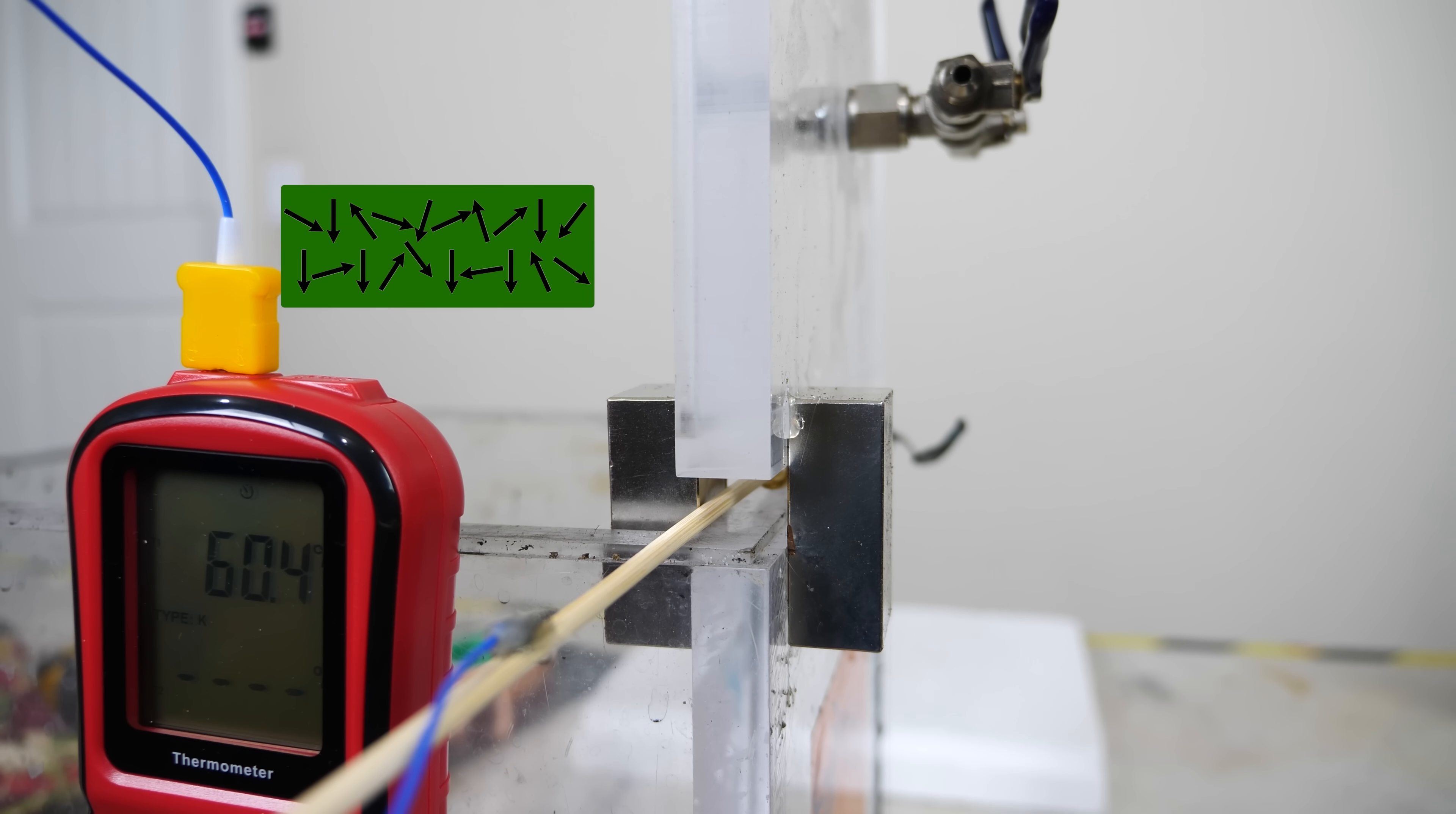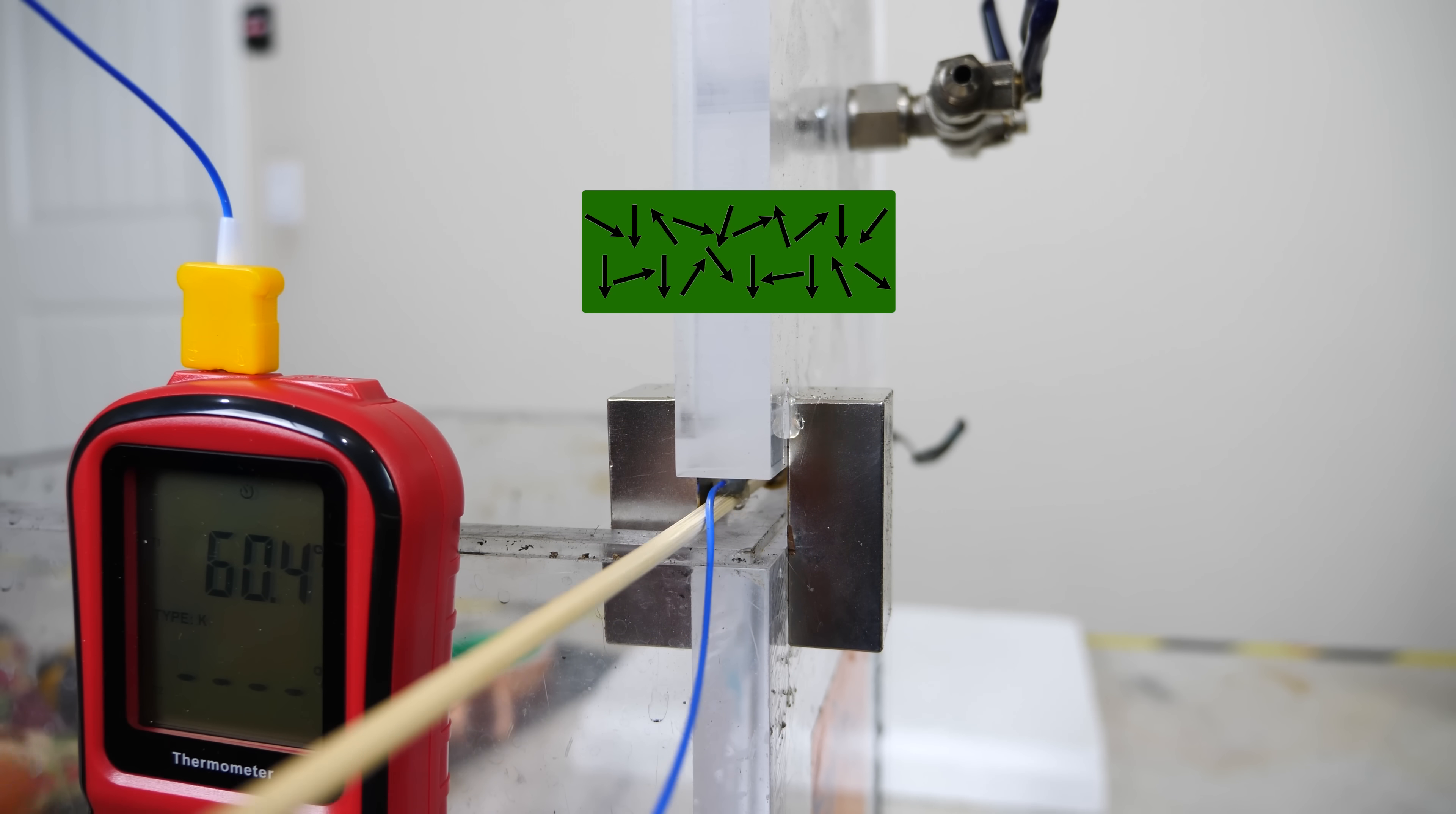So how is this working? When you apply a magnetic field to the gadolinium, it causes the magnetic domains to align. This reduces the degrees of freedom of the material so it can't vibrate as easily in one direction. So the entropy and heat capacity of the material decreases so it has to release some energy as heat, which causes the temperature to rise.